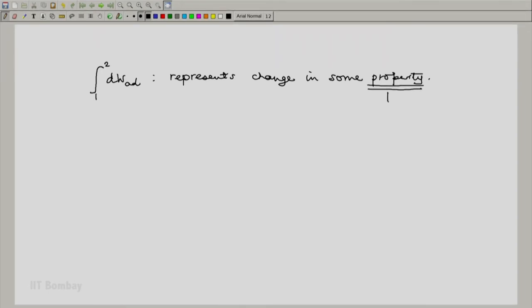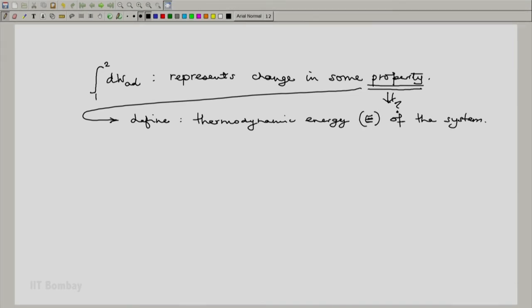Now the question is which property is this? We define this property to be the thermodynamic energy or simply energy E of the system and the formal definition would be notice that it represents change in some property.